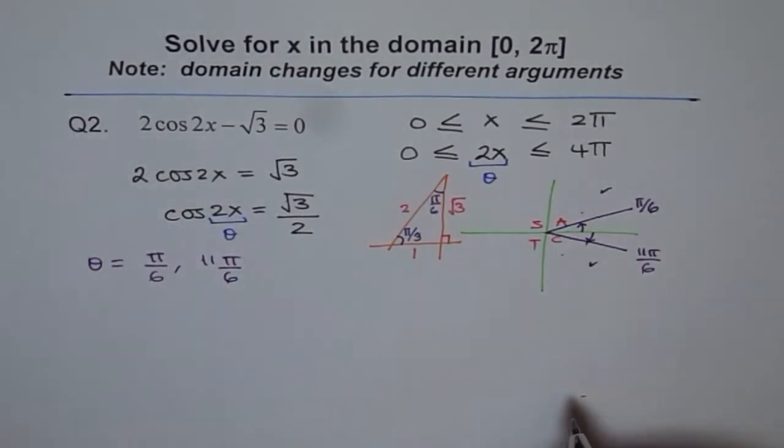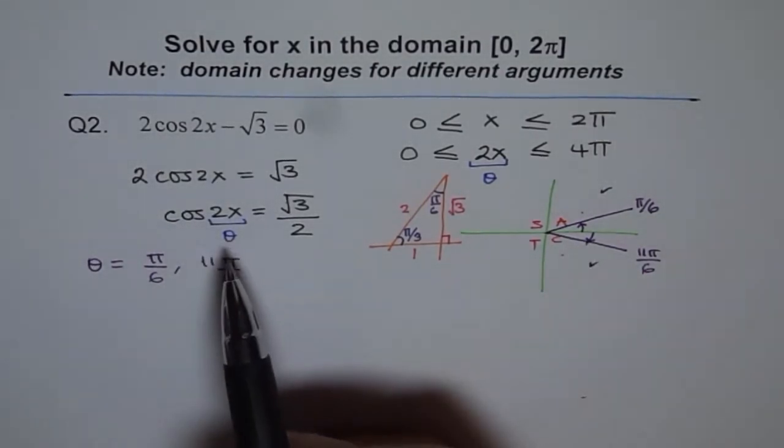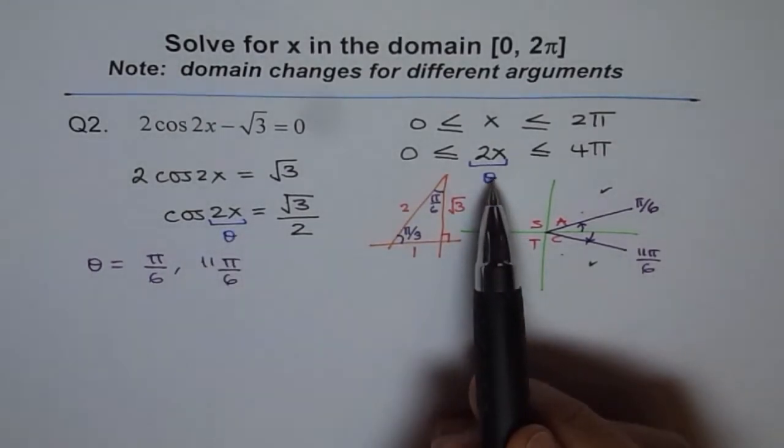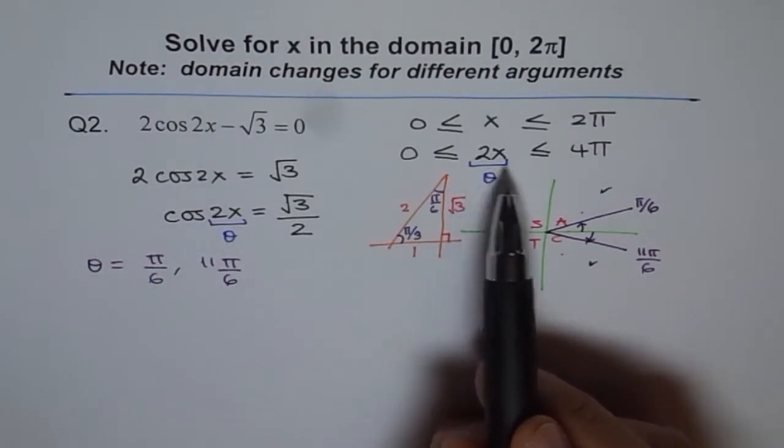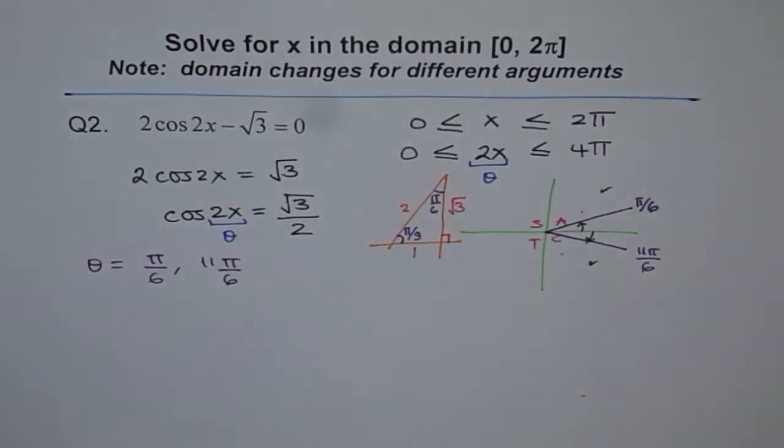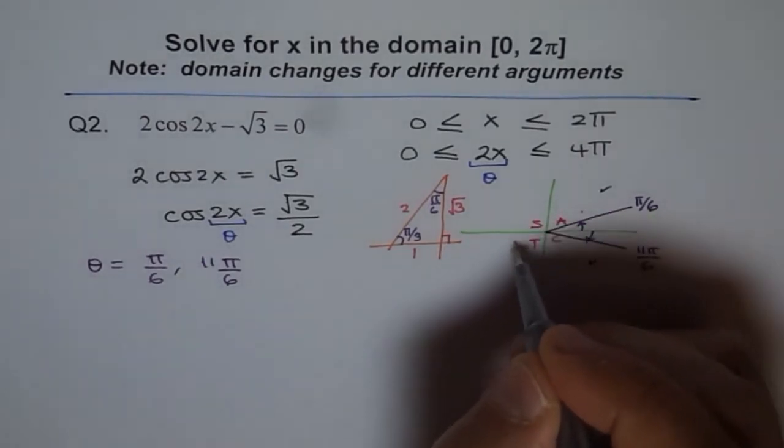Now remember one thing. Actually speaking, we are talking about cos 2x, not just cos x. And therefore, our domain has changed. For cos 2x, it is between 0 to 4π, and that means we have to go one more circle.